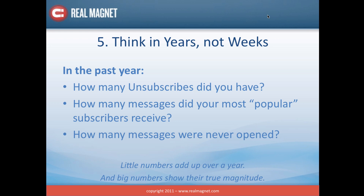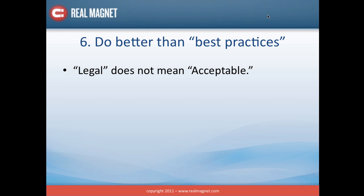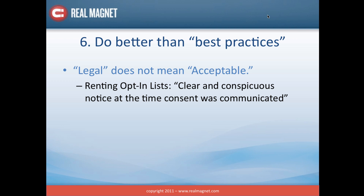The next fundamental is to do better than best practices. I hate the term 'best practices' — in this industry it becomes a shortcut for not the best we can do, but what's the best we can get away with. One example of this is that legal does not mean acceptable. Renting opt-in lists is a good example. If someone is on an opt-in list, the language from the CAN-SPAM law is that clear and conspicuous notice at the time consent was communicated is what needs to be provided. Essentially, if someone is signing up to a list that's opt-in, it has to be made clear at the point where they say yes that this is what they're signing up for — usually 'yes, sign me up for information from third parties,' because if you're renting a list, you're one of those third parties.